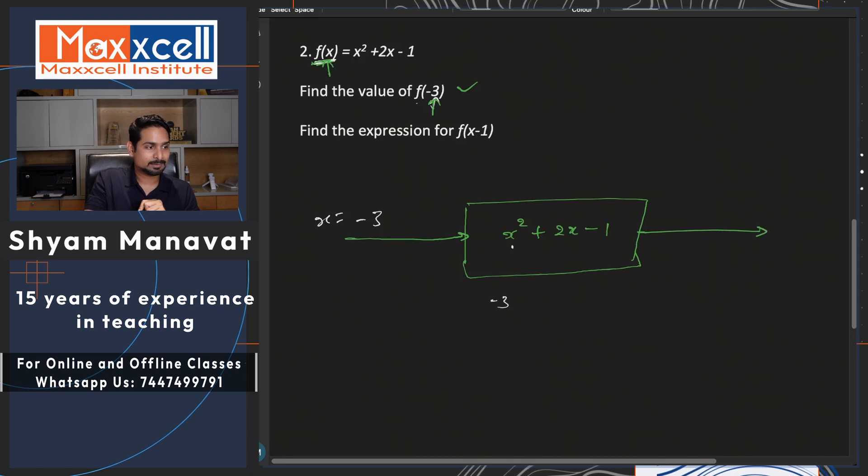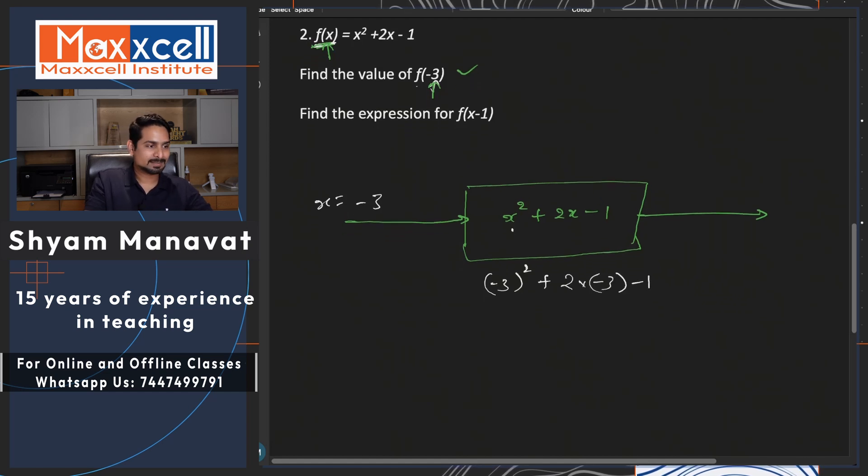So the outcome, the output should be substituting x is equal to minus 3 here. So minus 3 square plus 2 into minus 3 minus 1, simplified further, that is 9 minus 6 minus 1, that is minus 7, 9 minus 7 is going to get you 2. That is equal to f of minus 3, equal to 2, output.